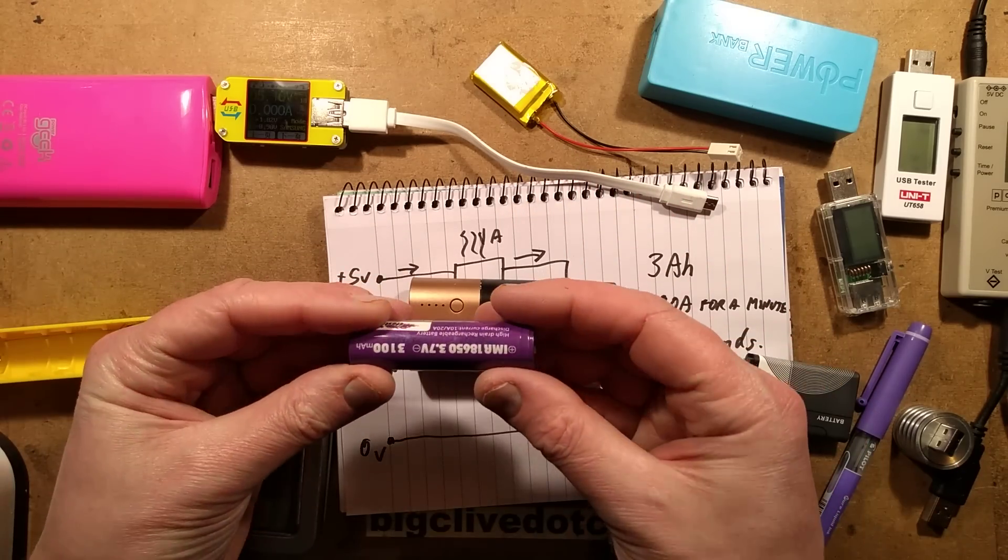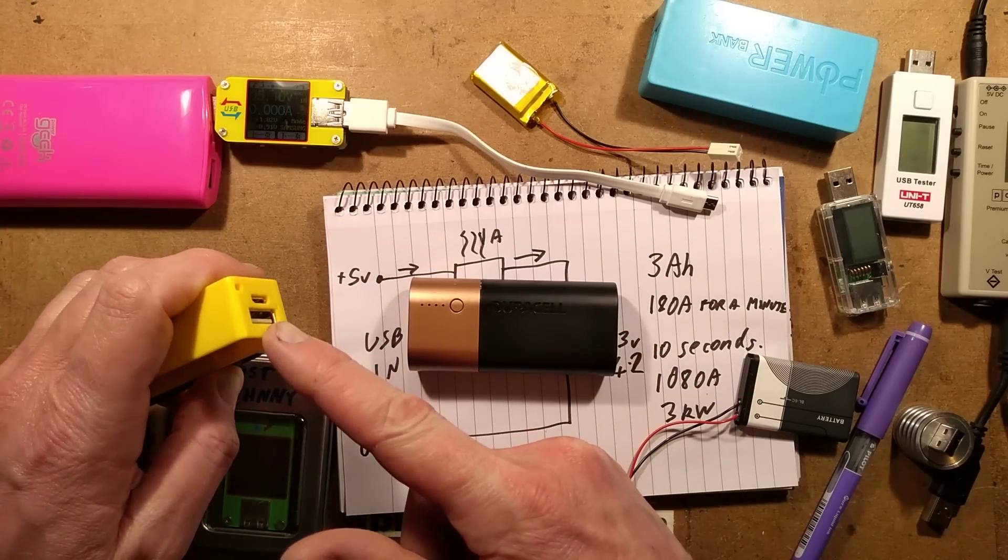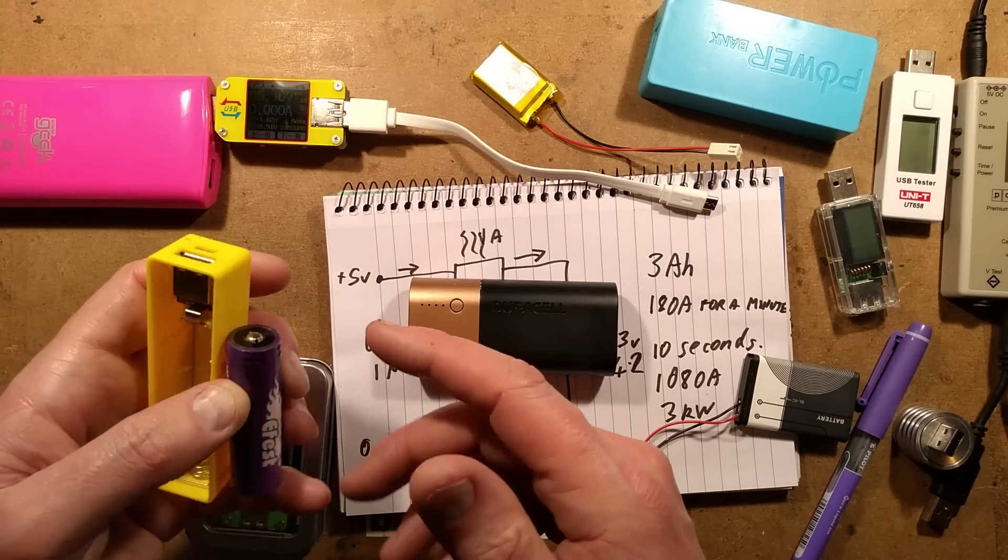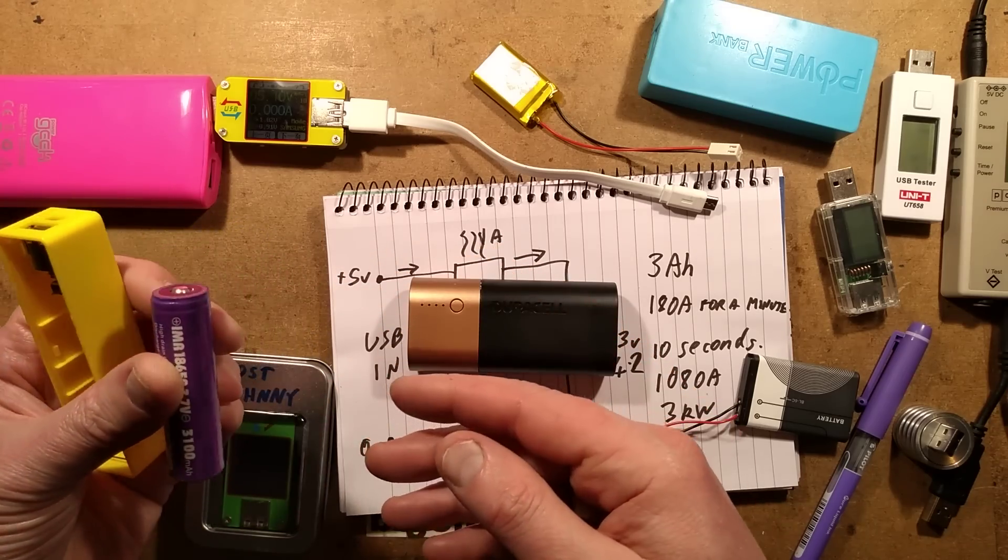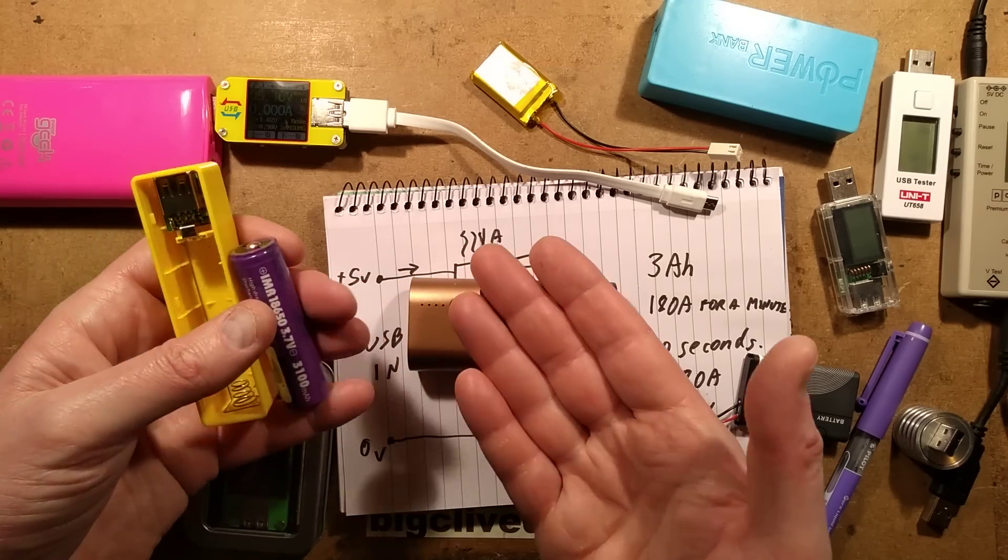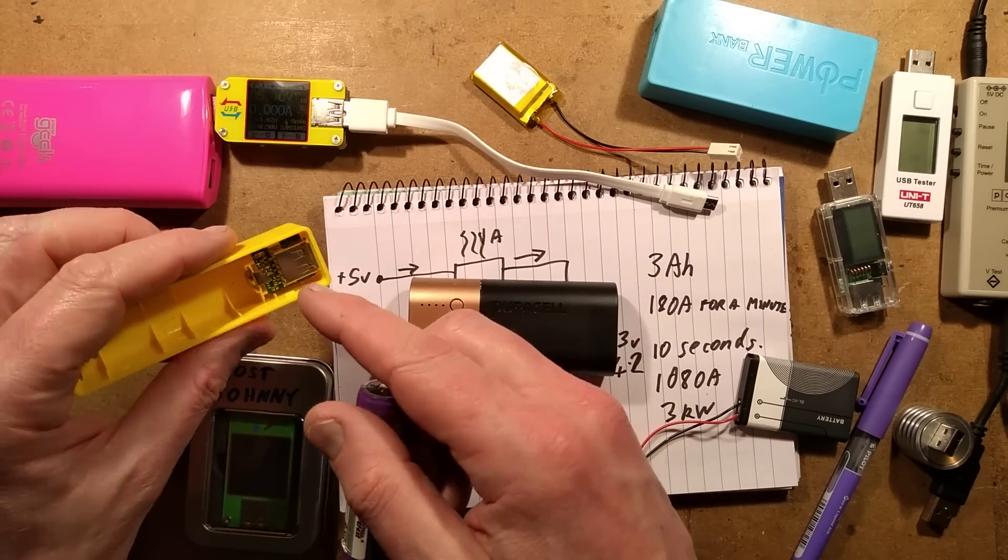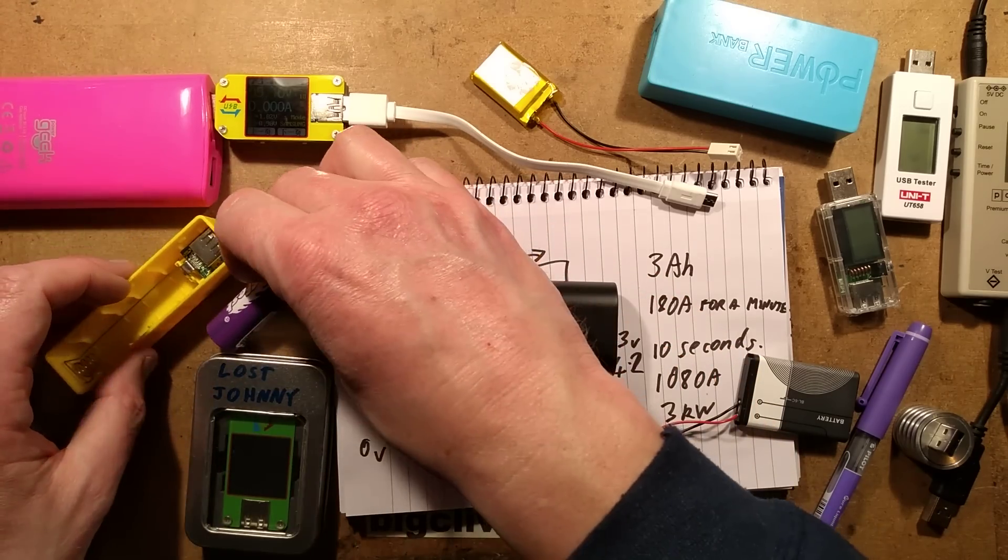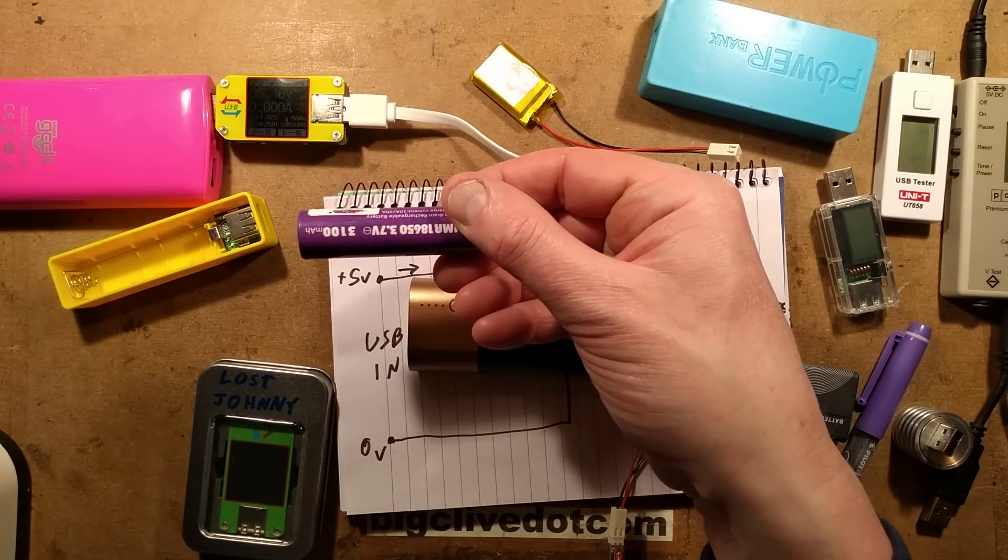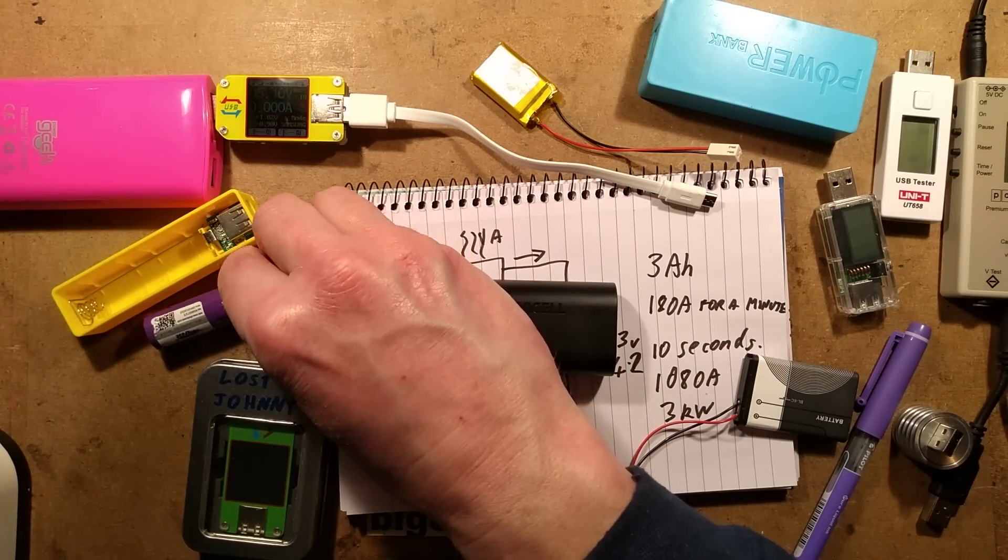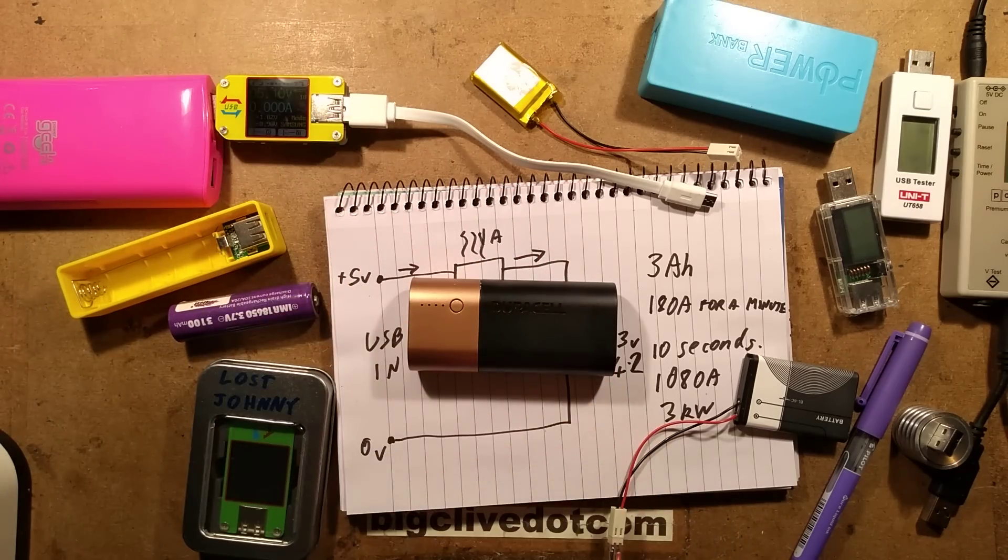Say for instance this is a 3 ampere cell and it measures at 3 ampere. You stick it in a power bank like this, you're not going to get 3 ampere out on the 5 volt side. The voltage of the cell will vary between about 4.2 down to about 3 volts, and it has to be boosted up to 5 volts. The power capacity, like 3 amps for an hour at 5 volts, you won't get that. It will be much less.